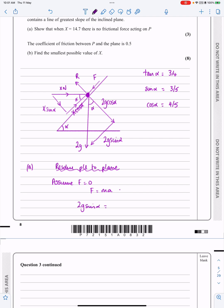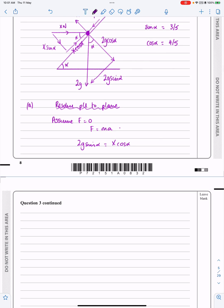F equals ma, leaving me with 2g sin alpha is equal to X cos alpha. We know what sin alpha and cos alpha are—three-fifths and four-fifths—so that's 6g over 5 is equal to 4X over 5, so X works out to be 3g over 2, and 3g over 2 is 14.7.